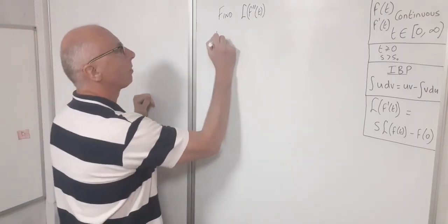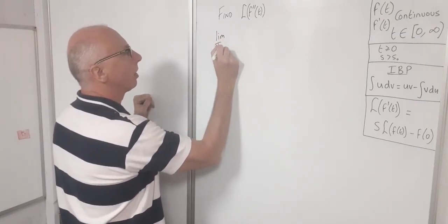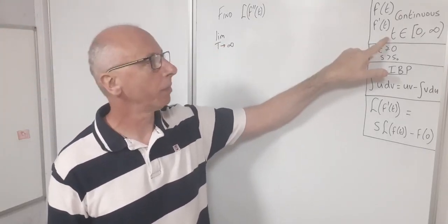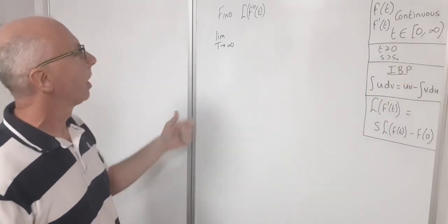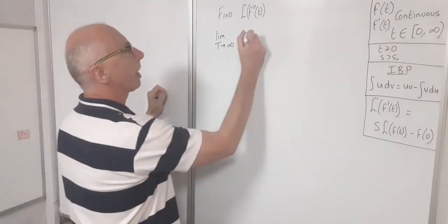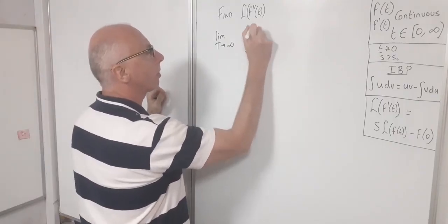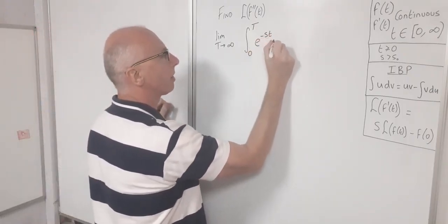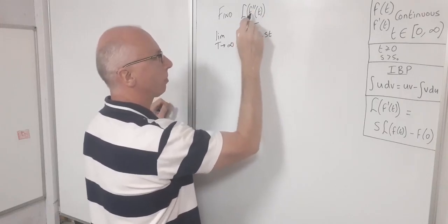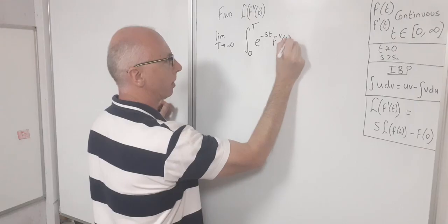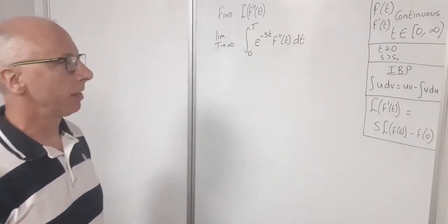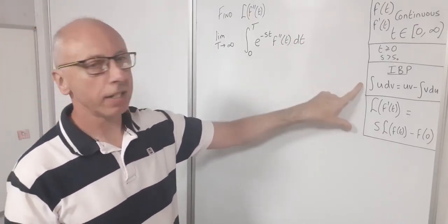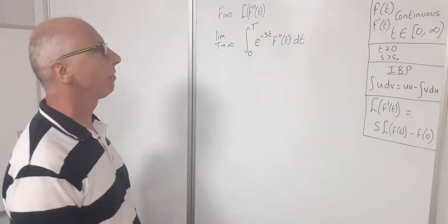Our setup is to find the limit as t approaches infinity. t is typically a value for time in the Laplace transform, and time always goes from zero to infinity. So we have the integral from zero to t, with the standard integrand e to the minus st, and we want to find the Laplace transform of whatever is inside the brackets — in this case the second derivative — with respect to t. We have an exponential function and a second derivative, so integration by parts will be very useful here.